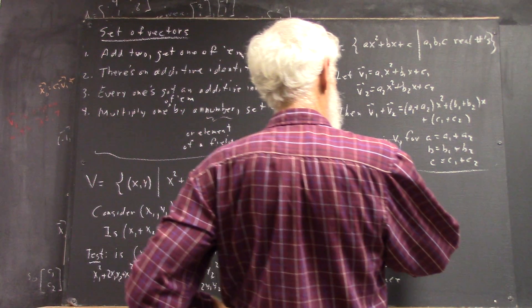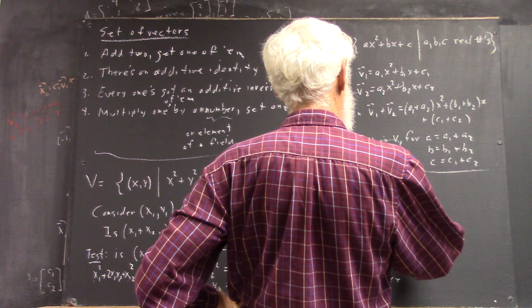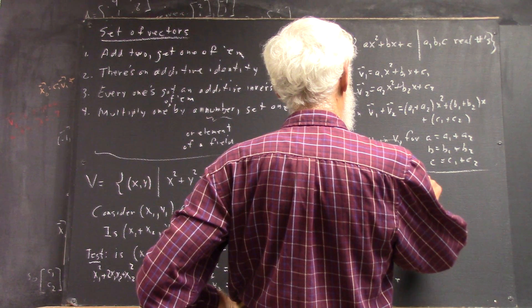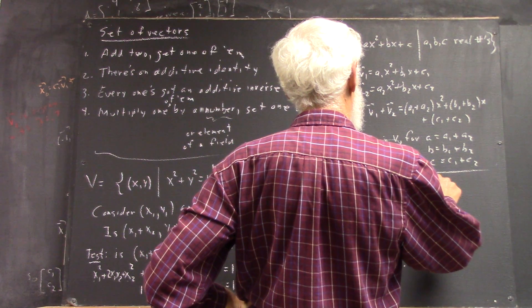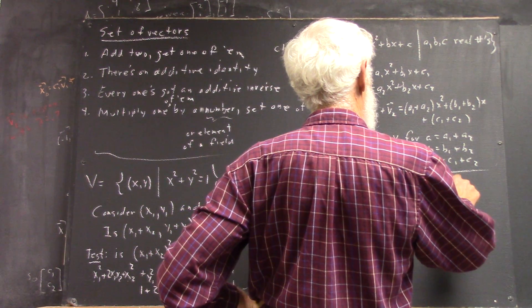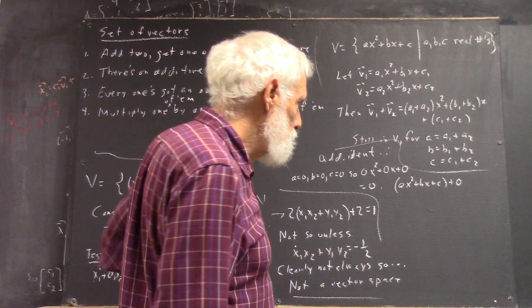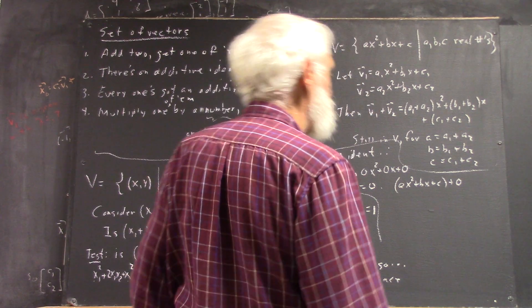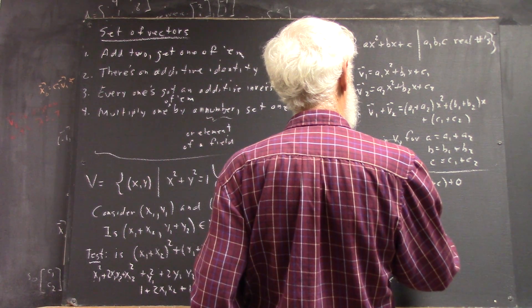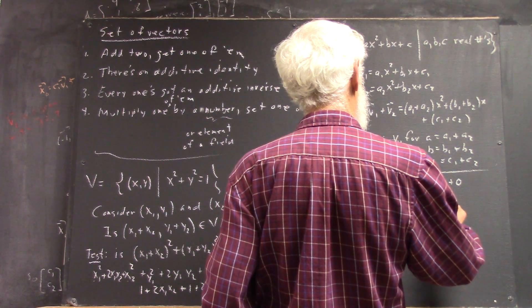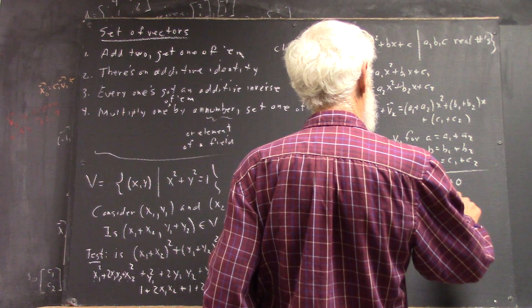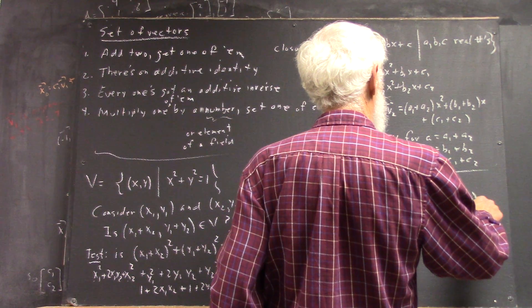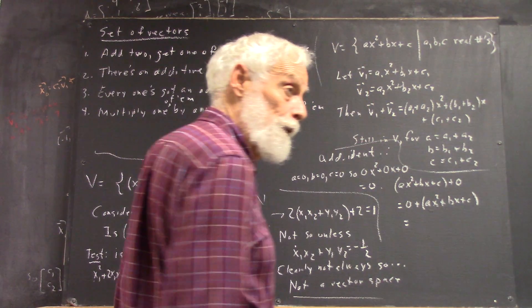And then to be complete, Ax squared plus Bx plus C plus 0, right? And to be really complete, you've got to put 0 on both sides, unless you first establish that addition is commutative, which of course we have. Now, just to be complete, we write this, right?